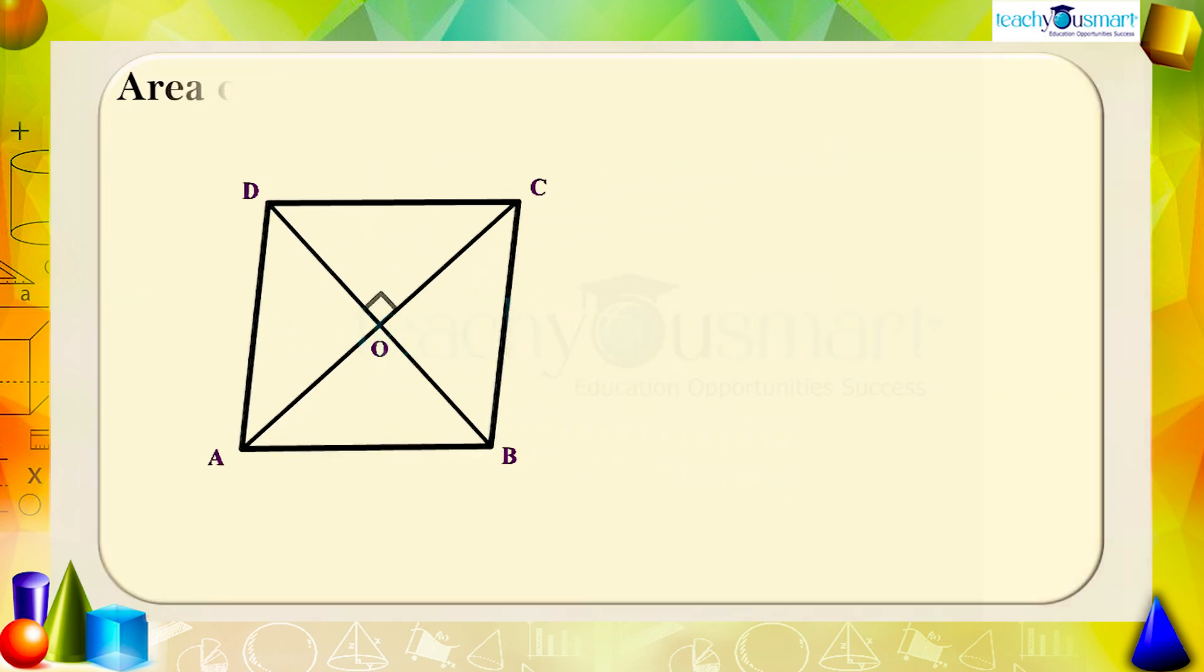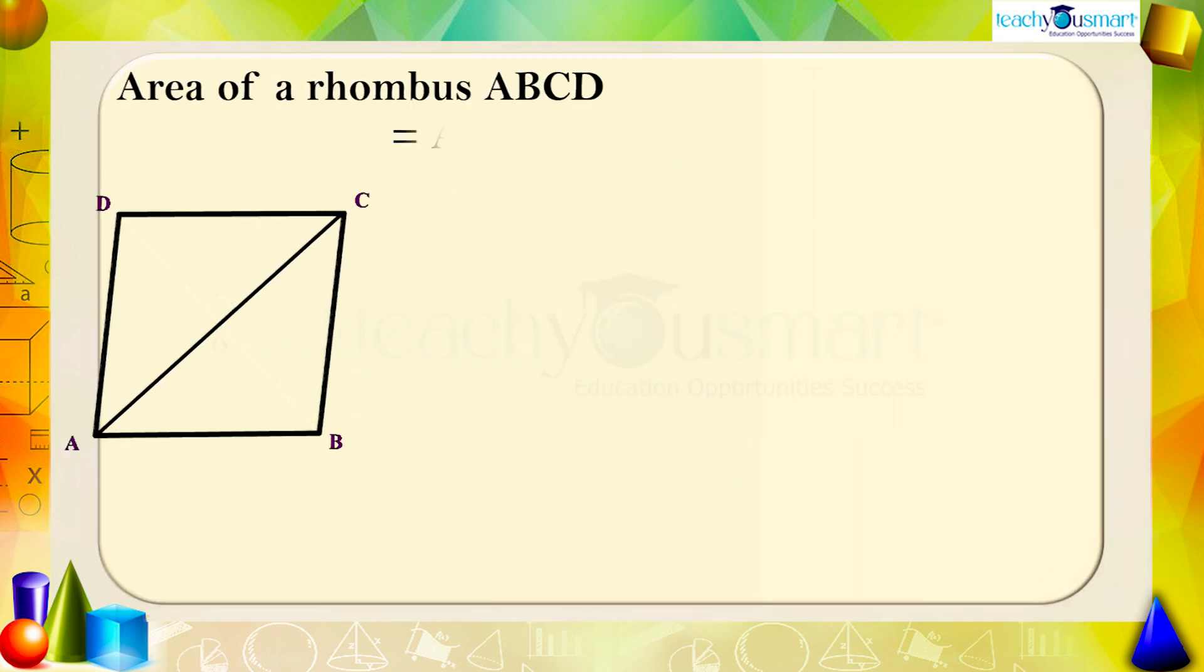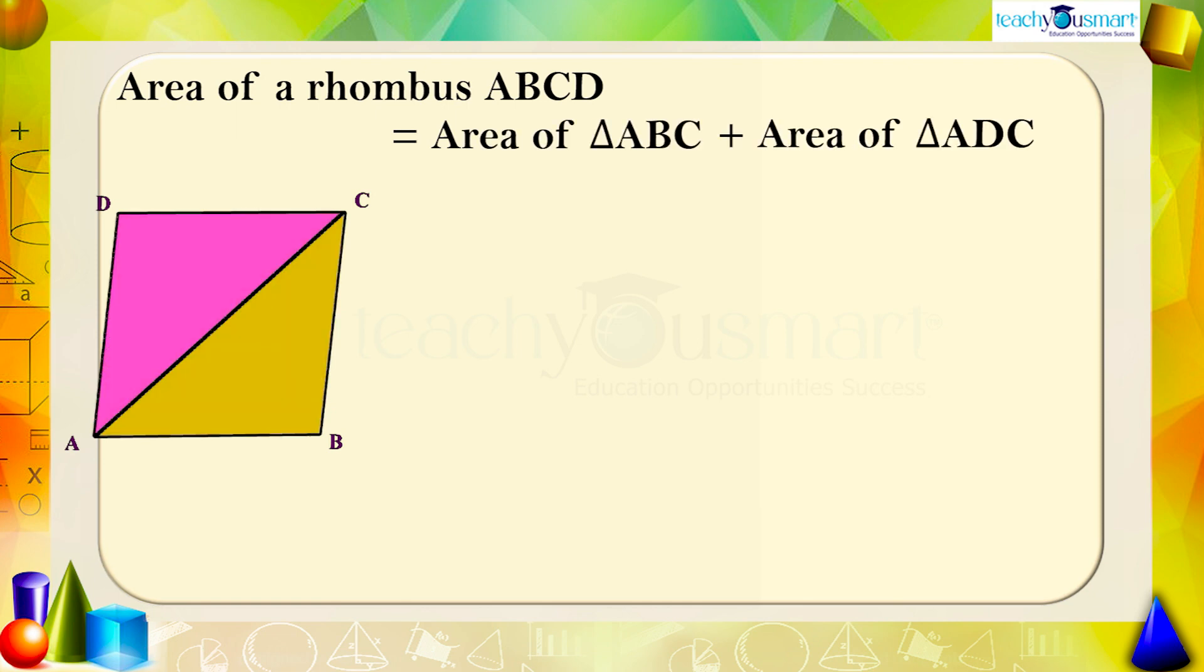Now, the area of rhombus ABCD equals area of triangle ABC plus area of triangle ADC, equals 1/2 × AC × BO plus 1/2 × AC × OD.